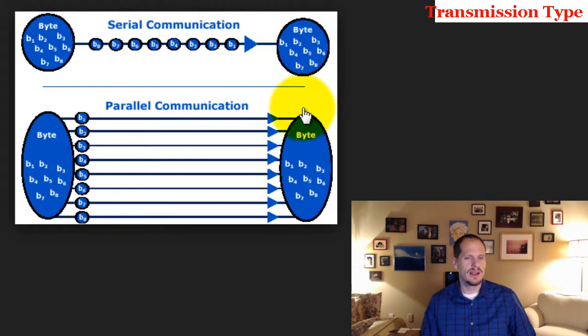A parallel communication, we might have like eight wires here in parallel, like a multi-lane freeway, and all the zeros and ones get sent at once. Now you might think that looks like that's going to be way faster because you've got eight lines sending data as opposed to one. But that's not always the case.